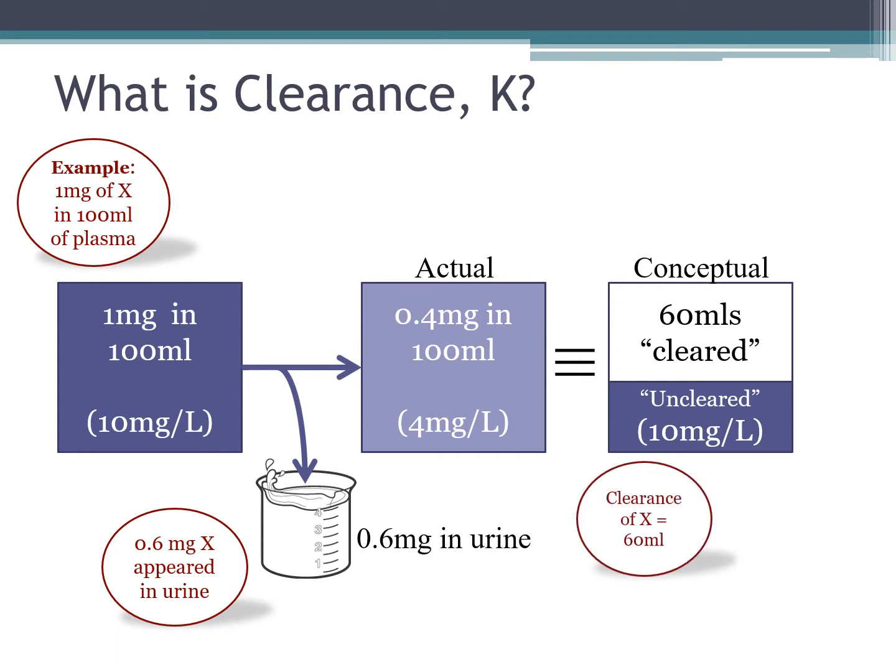So in this case, the clearance of X is 60 ml, and if it occurred over 1 minute, it is 60 ml per minute.